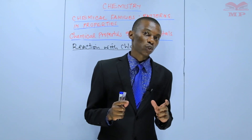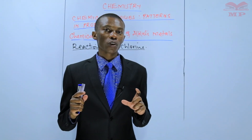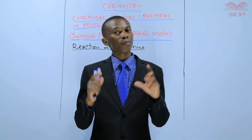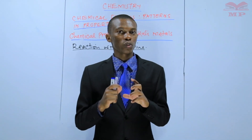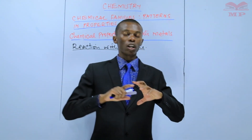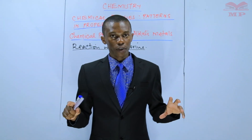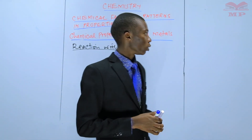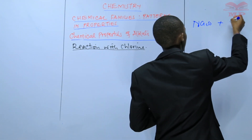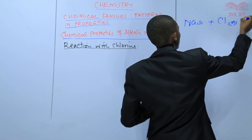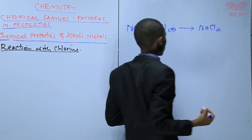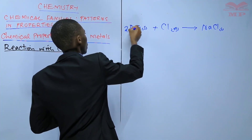Remember, this reaction should take place in a fume chamber or in an open place. The reason is that chlorine gas is a very poisonous gas and may affect your respiratory system. That's why you should protect yourself by carrying out this experiment in a fume chamber or in an open place where there is plenty of air. The equation is: sodium (solid) reacts with chlorine gas, leading to the formation of sodium chloride.